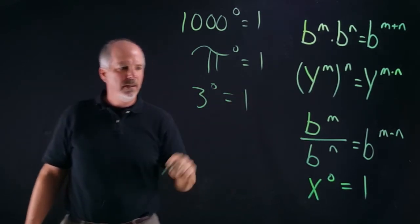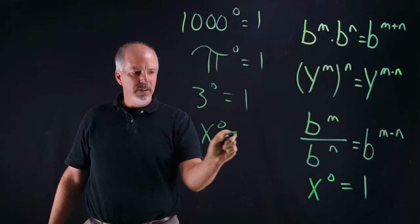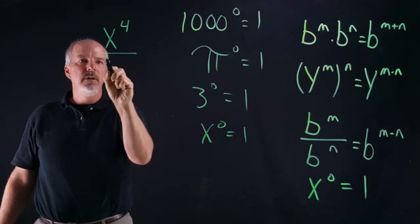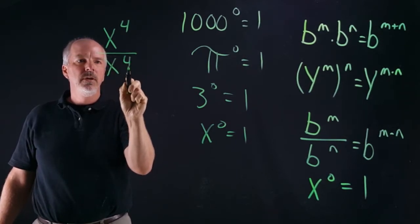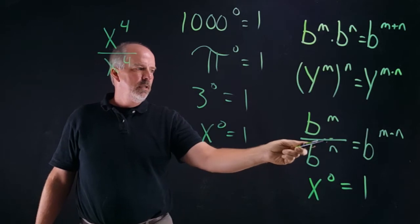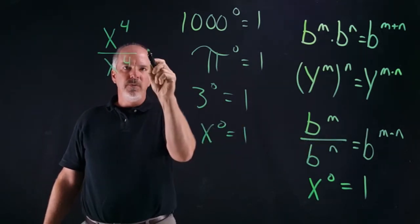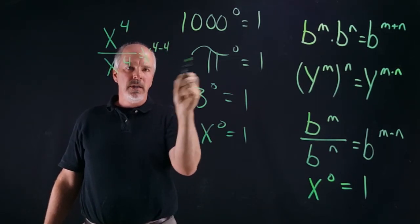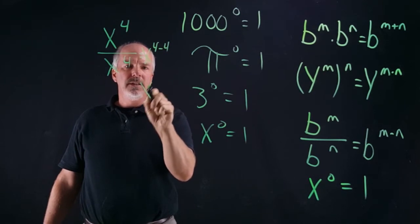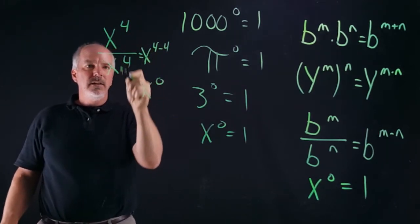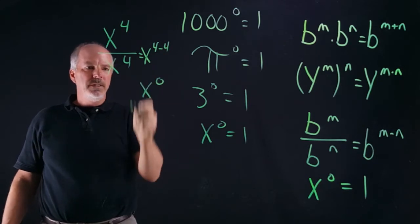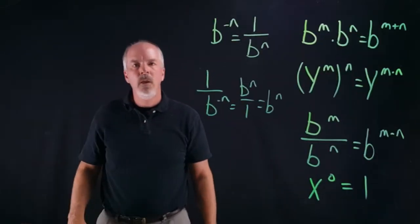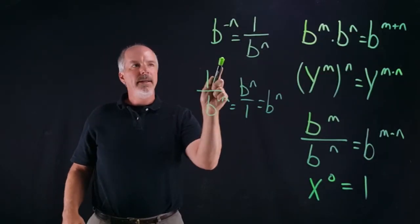We can show that x to the zero equals one. Let's say we have x to the fourth over x to the fourth. Looking back at our division law, when we have exponents we subtract, so that's x to the four minus four, which equals x to the zero. Or you can look at it as anything divided by itself equals one — two ways to look at that, so x to the zero equals one.